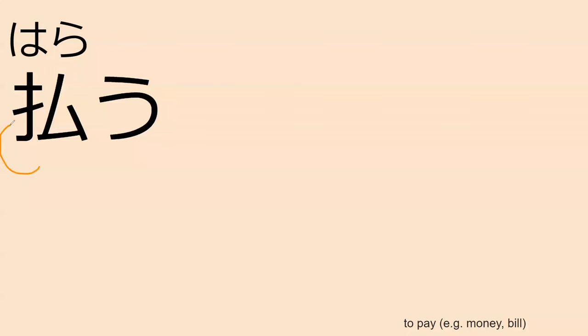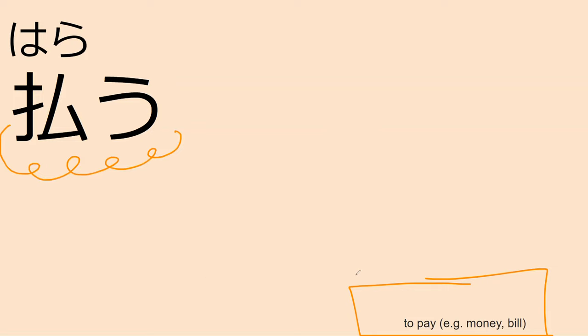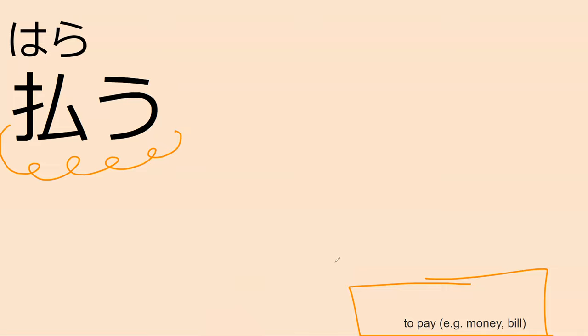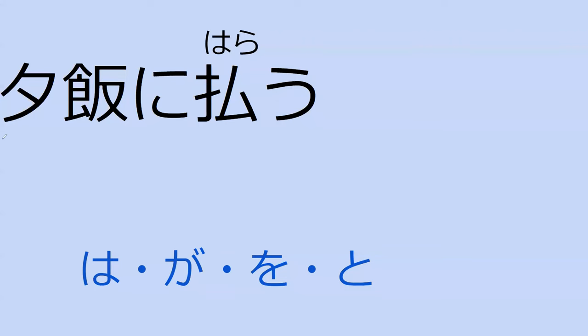Our next word is harau. I have a note to make sure I told you the right meaning, which is to pay. There's a second meaning for harau which is to dust, and that also shows up in this book. But the first time we see harau it refers to paying something like a bill. Specifically it's like a wiping motion — you're wiping off dust, and you're wiping away the bill. You wipe away the debt — clean out your accounts — exactly.